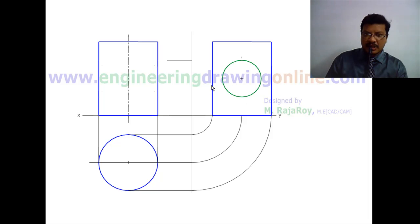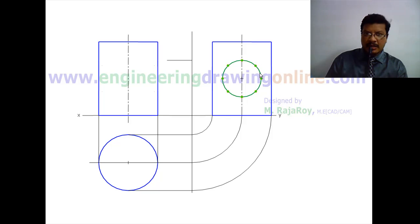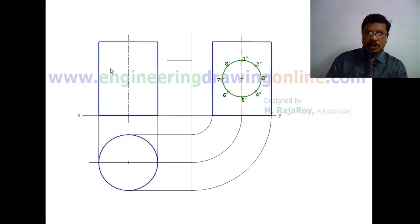Now divide this horizontal cylinder into 8 parts as shown here. Name all these 8 parts in the clockwise direction: 1 double dash, 2 double dash, 3 double dash, 4 double dash, 5 double dash, 6 double dash, 7 double dash, and 8 double dash. Now from this side view you project the front view by drawing the locus lines.